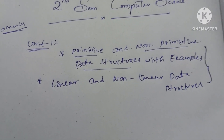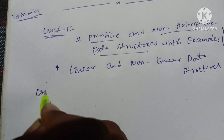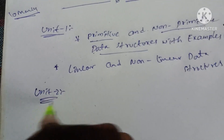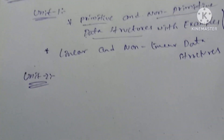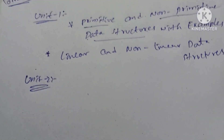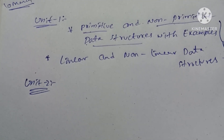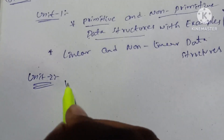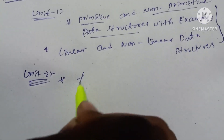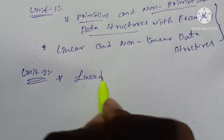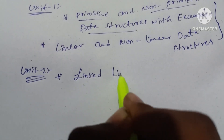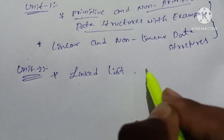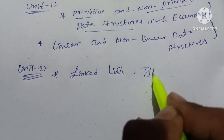We can do Unit 2. In Unit 2, the main question is linked list and its types. What is a linked list? Here are the types.